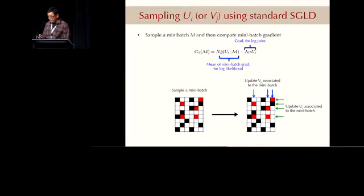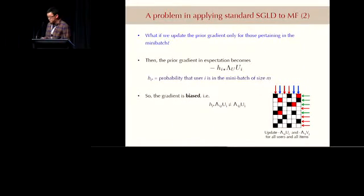In the stochastic gradient Langevin dynamics, the stochastic gradient has to approximate the real gradient in expectation. Whereas if you do this, you can see that if you only get a small sample of data, those rows and columns that are not in your mini-batch, they will basically have zero gradient. So in expectation, that is gonna cause some problems.